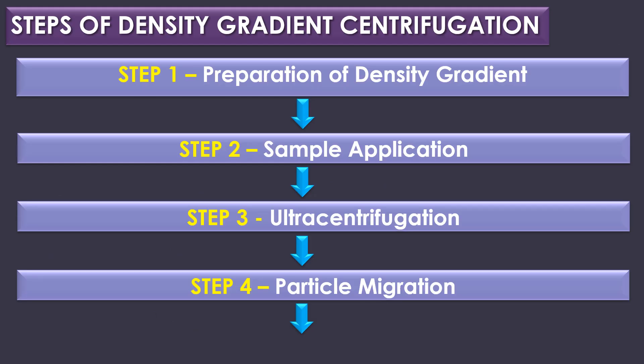Steps of density gradient centrifugation. The first step is preparation of the density gradient. A density gradient is created by layering a medium with varying concentrations of a solute in a centrifuge tube; the lower concentration solution is gently layered over a higher concentration solution to form a gradient. Common density gradient media include sucrose or cesium chloride solutions. The second step is sample application: the sample containing the particles to be separated is carefully applied on top of the density gradient using a pipette or other suitable methods to ensure the sample is layered without disturbing the gradient.